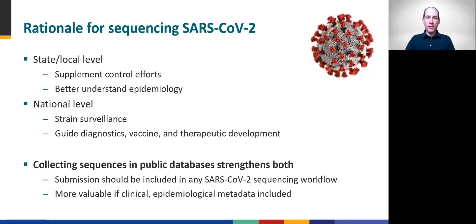We have witnessed unprecedented sharing of viral genome sequence data across the globe from the outset of the COVID-19 pandemic. This open data sharing empowers real-time snapshots of the evolving virus population with tools like Nextrain and Pangolin, and has enabled rapid, effective vaccine development. Therefore, depositing sequence data into public repositories should be an integral step in the SARS-CoV-2 sequencing workflow at every laboratory, and the importance of attaching consistent clinical and epidemiological metadata cannot be overstated. Although this module does not cover the details of data submission, some links to helpful resources are included on the toolkit webpage.